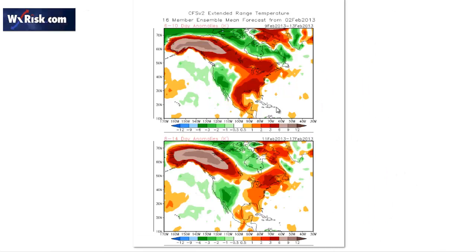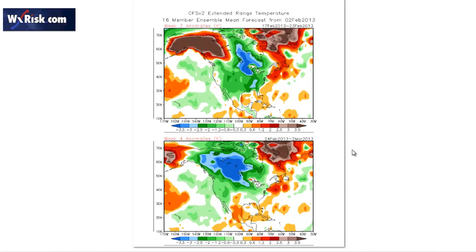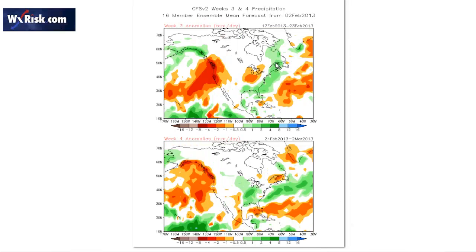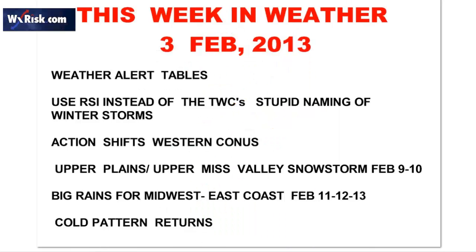Looking at the CFS, we can see how warm it is in the 6-to-10 day and 8-to-14 day periods, but it does turn somewhat colder in weeks 3 and 4, with a little precipitation on the East Coast and Midwest. For those reasons, I'm not willing to kill off the entire winter just yet — I still think we have some possibilities. We'll see what happens and how long the warm period lasts. If we haven't gotten cold by the middle of the month, then you could probably put a fork in the winter and bring on an early spring. This is meteorologist DT from weatherrisk.com — I'll talk to you soon.